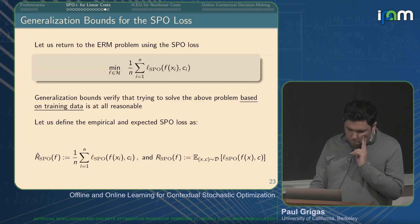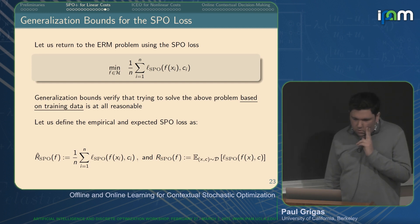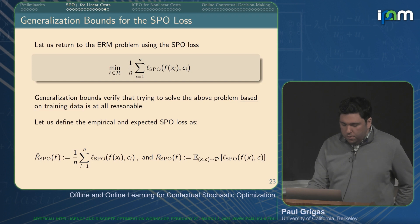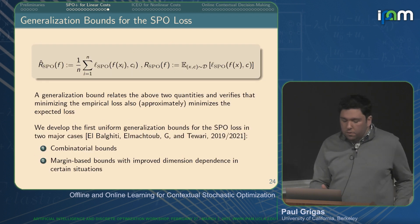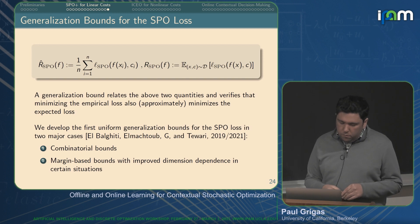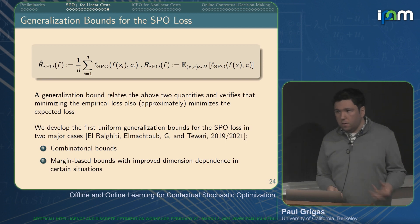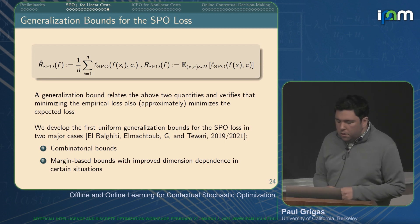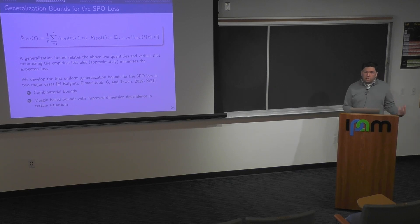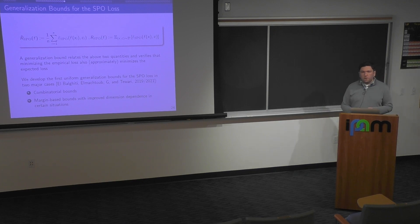We've also developed generalization bounds, asking whether we can relate empirical risk to expected risk and bound their absolute difference based on IID samples. Standard theory does not carry through for SPO+. We developed the first real generalization bounds in this setting based on combinatorial notions like extensions of VC dimension to multi-class problems, as well as stronger margin-based bounds with improved dependence on dimension when the distribution satisfies favorable properties.